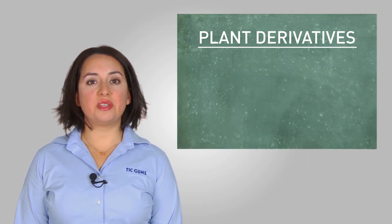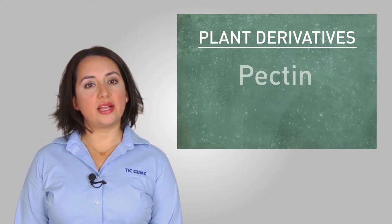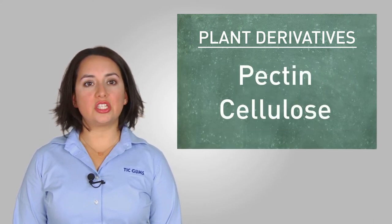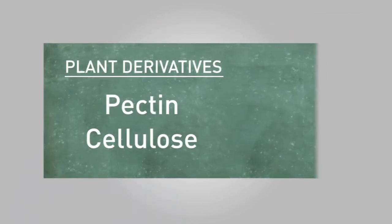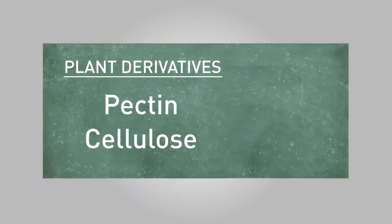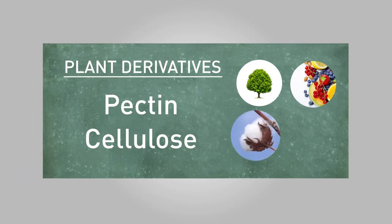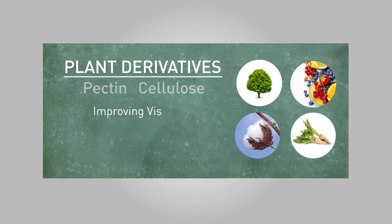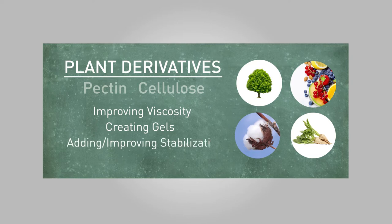Two specific examples from this category are pectin and cellulose. These gums are extracted from various natural plant sources like trees, fruit, cotton, and even vegetables like sugar beets. Their main uses tend to be for improving viscosity, creating gels, and adding or improving stabilization.